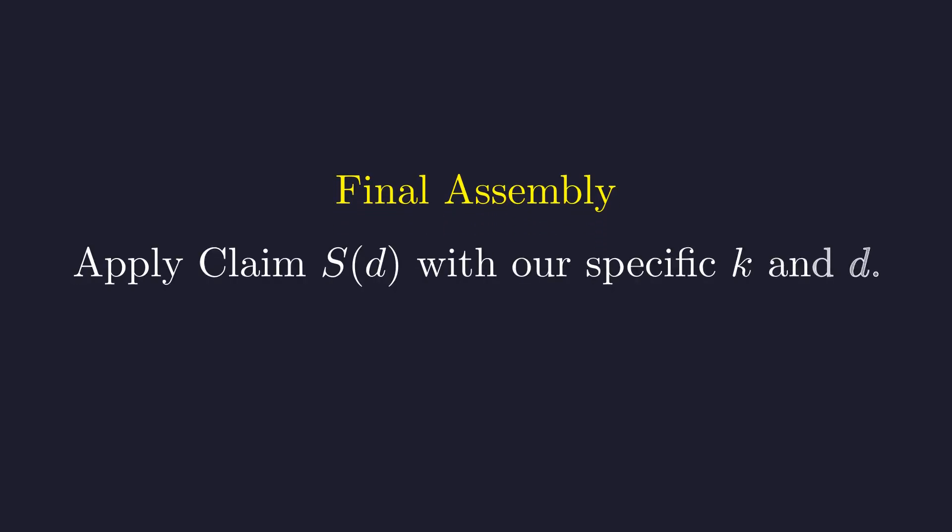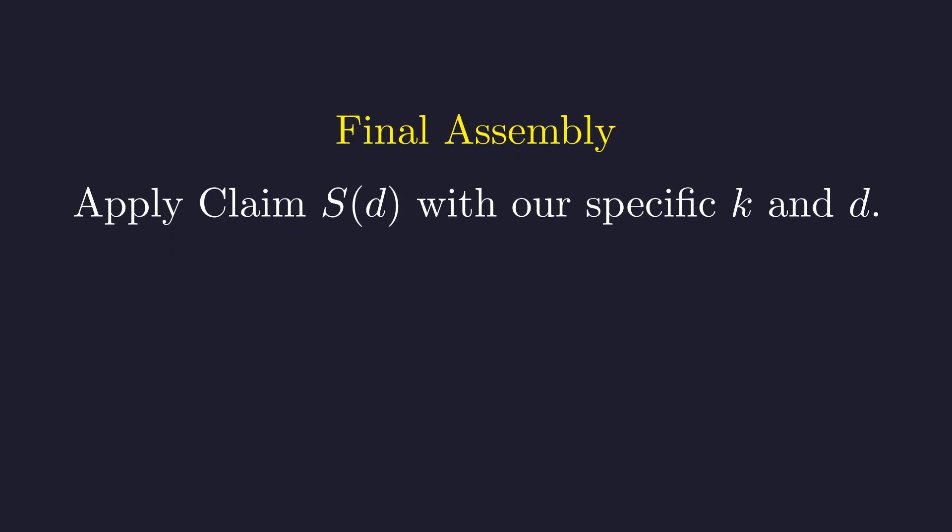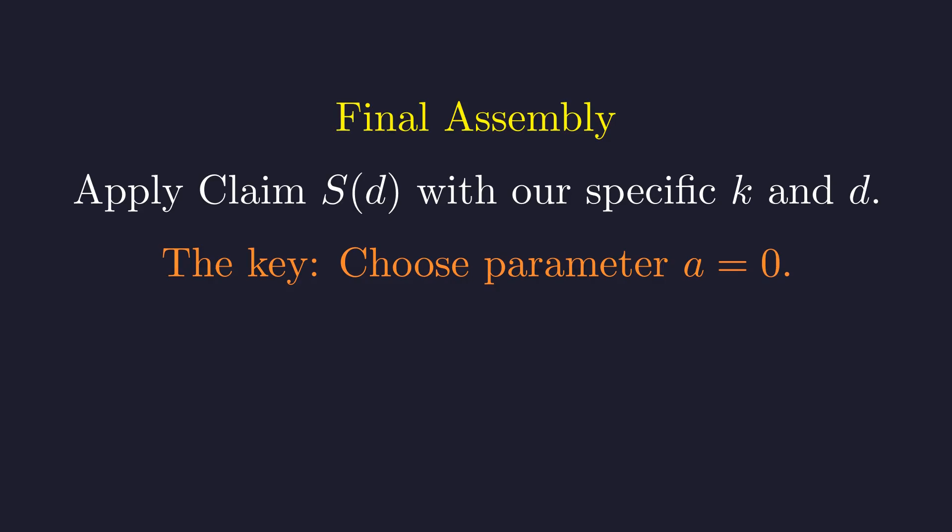Now we use our powerful proven claim to solve the original problem. For our original n, which equals 2 to the k times d, we apply the claim S of d. Here is the crucial step. We strategically choose our free parameter a to be 0.